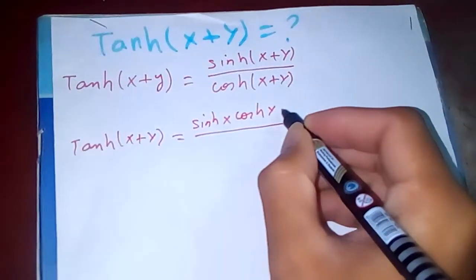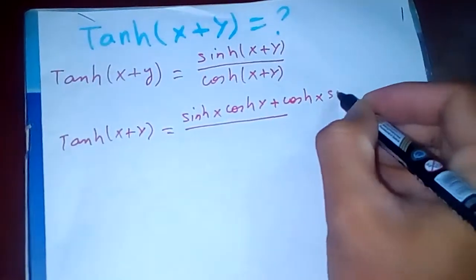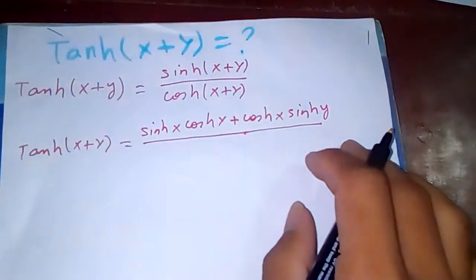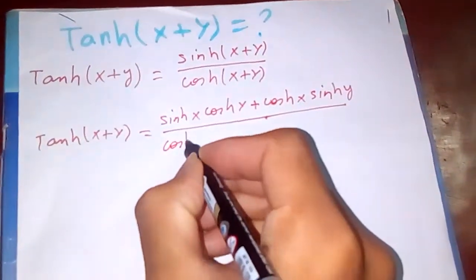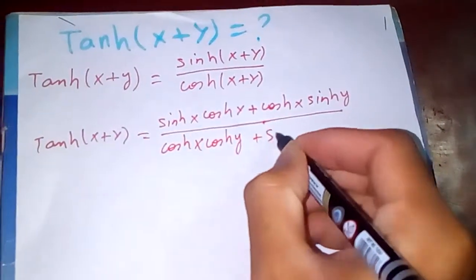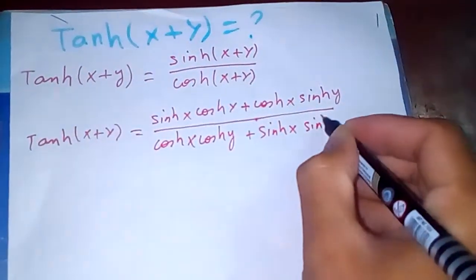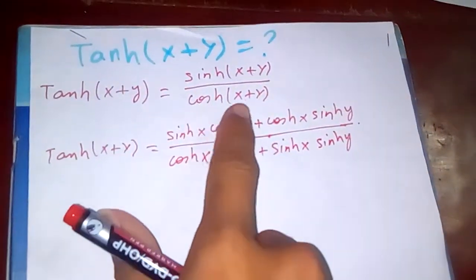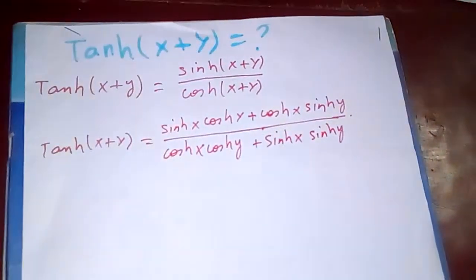...plus cosh(x)·sinh(y), divided by cosh(x+y), which is cosh(x)·cosh(y) plus sinh(x)·sinh(y). Note that in trigonometry, cos(x+y) has a negative sign here, but in hyperbolic functions it is positive.